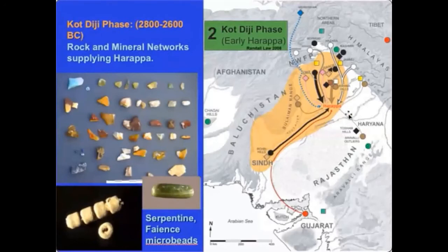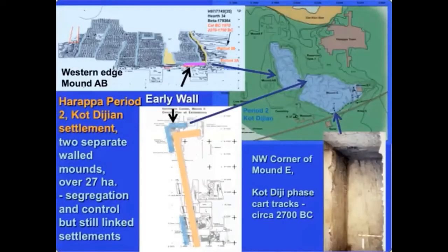During the Kodigian phase at Harappa, we see continued use of resources from the north, but also an expansion to the south with more types of resources coming from other regions. As people began using locally available resources, they were expanding to find new ones, reflecting a competitive economic system. This is also when we see the first walls being developed around settlements. The site was divided into two sectors, and by the Kodigian phase it becomes walled — I argue not for defensive warfare purposes, but for control of economics and production.